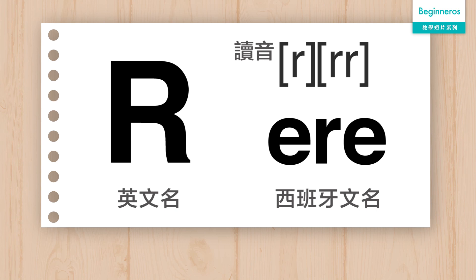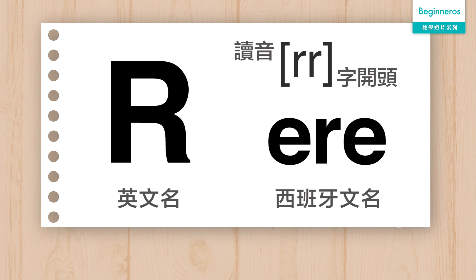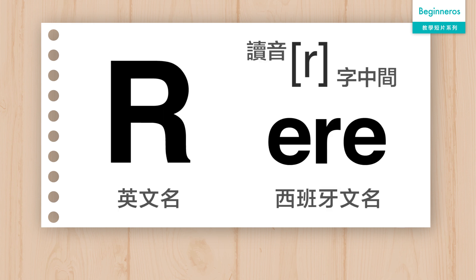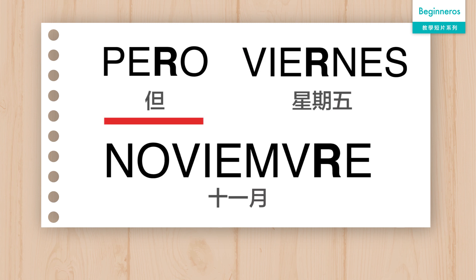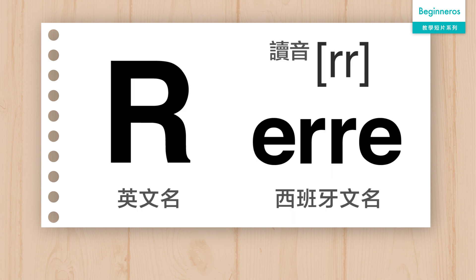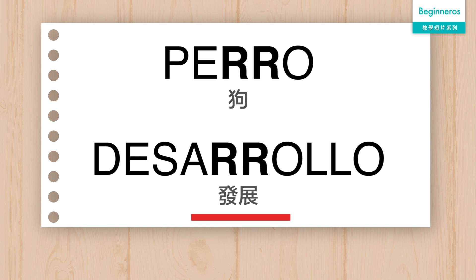接下來的就是西班牙文的 R，它的名字就是 Erre，而它的音 R，相信不少人都聽過，但是大家不用擔心，因為其實西班牙文的 R 並不是經常發出那麼強的音。如果一個 R 在一個字的開頭的話，我們會發出一個比較重的 R 音，例如 Rojo, Reloj。但是如果它在普通的字中間的話，我們會發出一個比較短的音，例如 Pero, Viernes, Noviembre。如果有兩個 R 在一起的話，我們通常都會發出一個比較長的音，例如 Perro, Desarrollo。